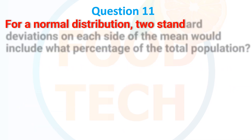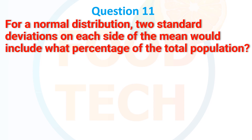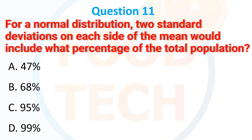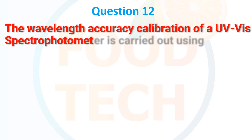For a normal distribution, two standard deviations on each side of the mean would include what percentage of the total population? A. 75%, B. 68%, C. 95%, D. 99%. The correct answer is C: 95%. The wavelength and absorbance calibration of a UV-visible spectrophotometer is carried out using holmium oxide or didymium filter standards.